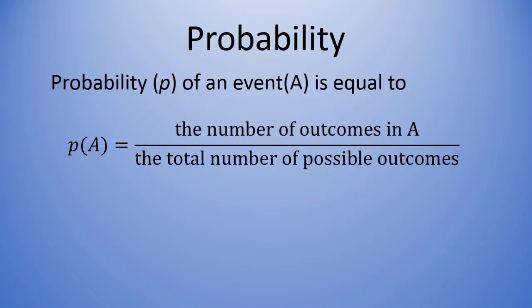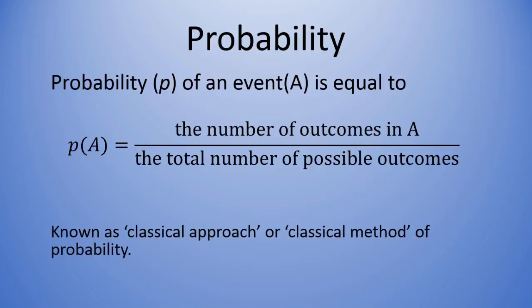And A is just a generic placeholder for anything that happens, like flipping a coin, picking a lottery number, or what have you. And this definition here comes from what's known as the classical approach, or the classical method of probability.